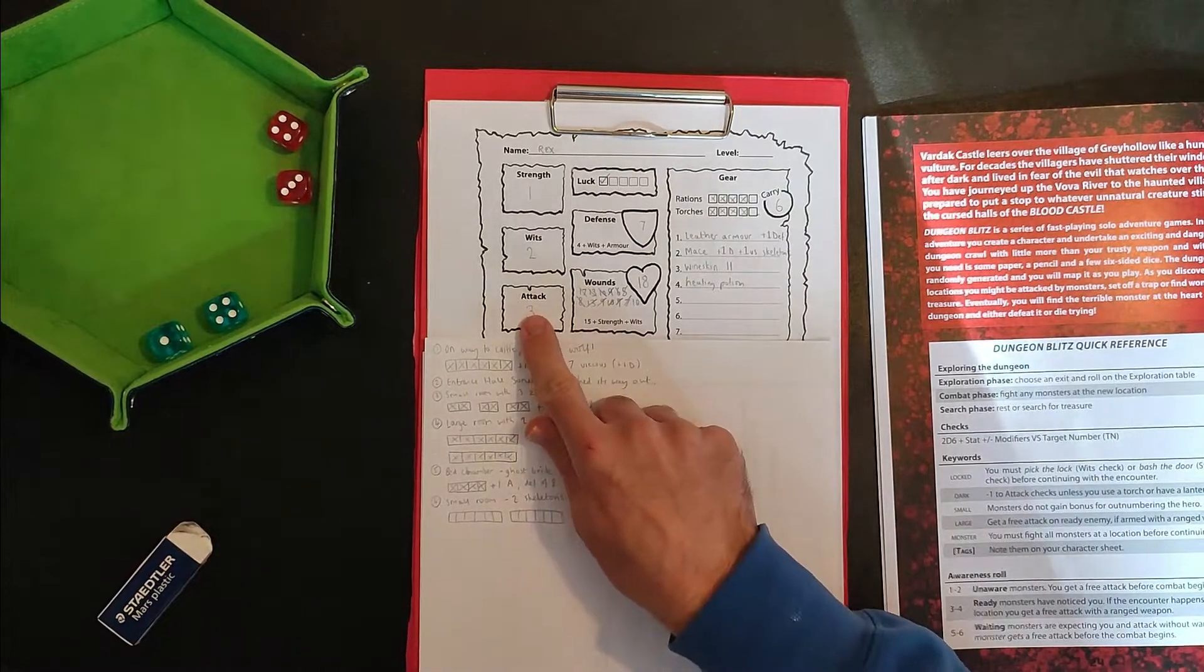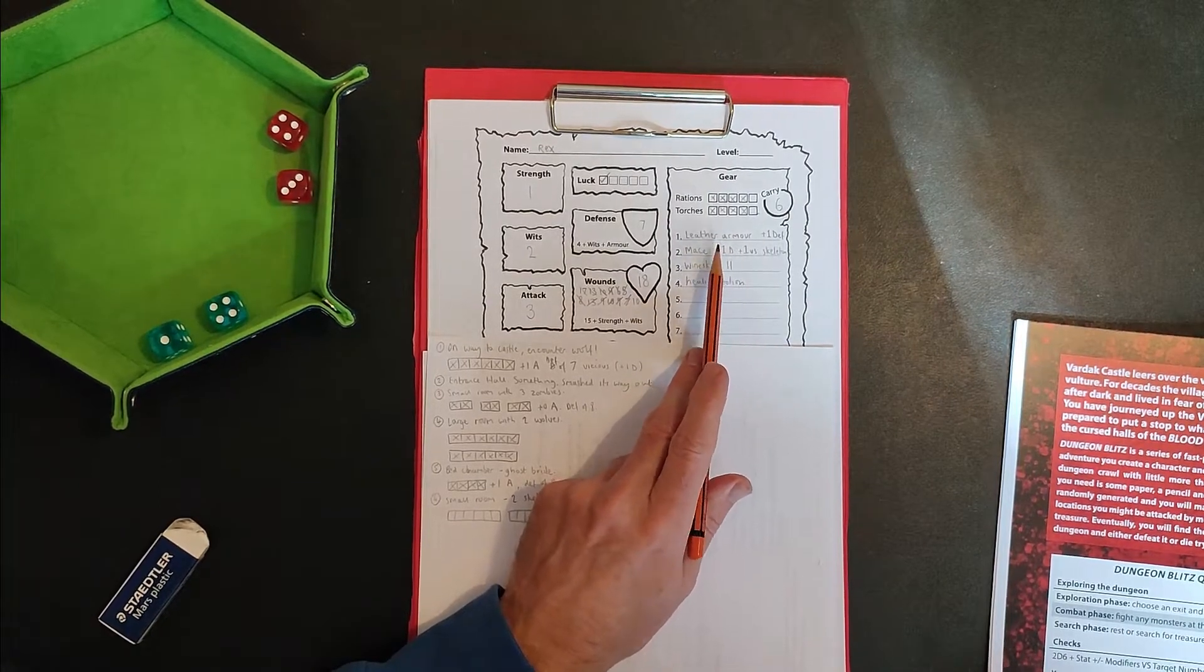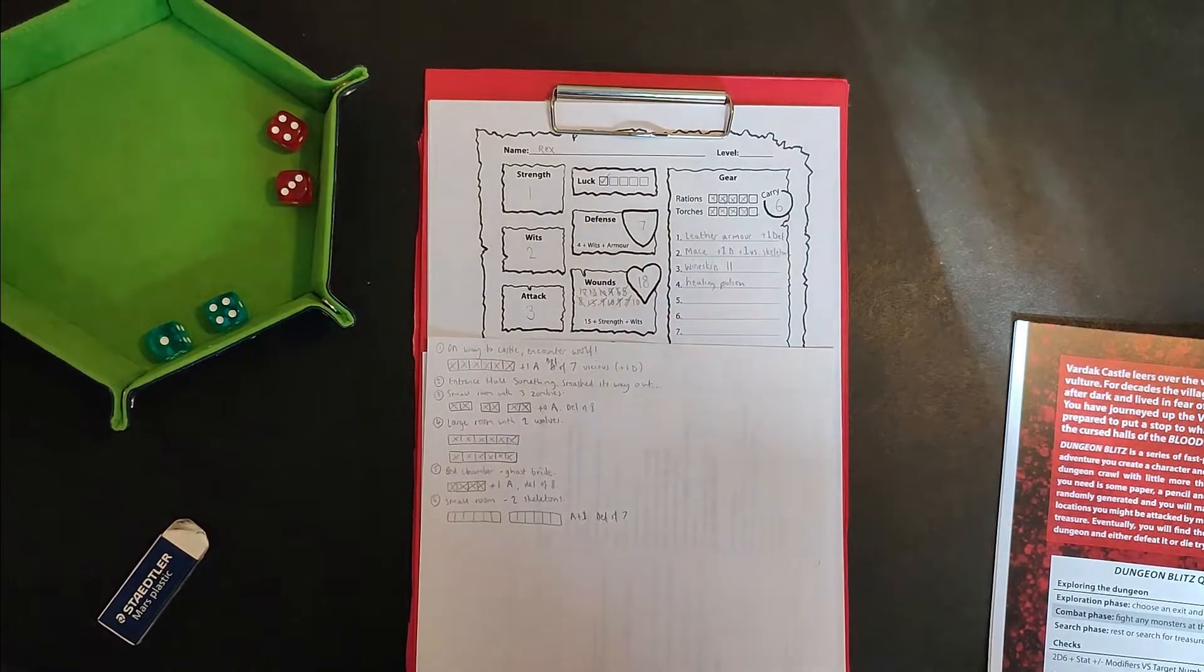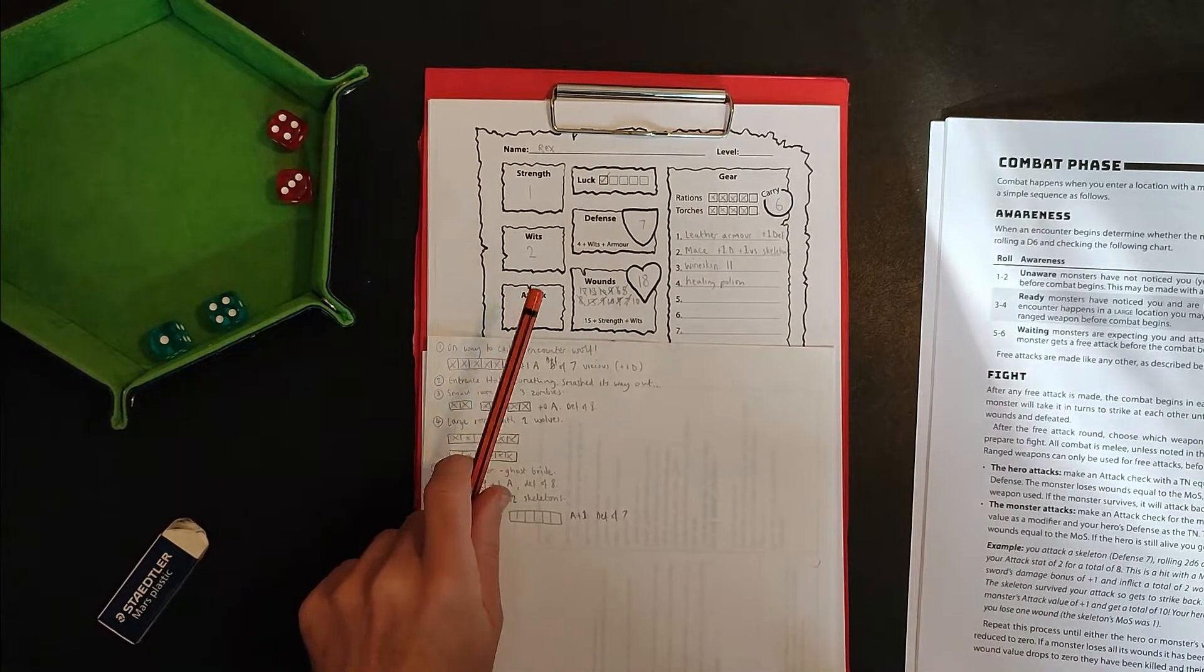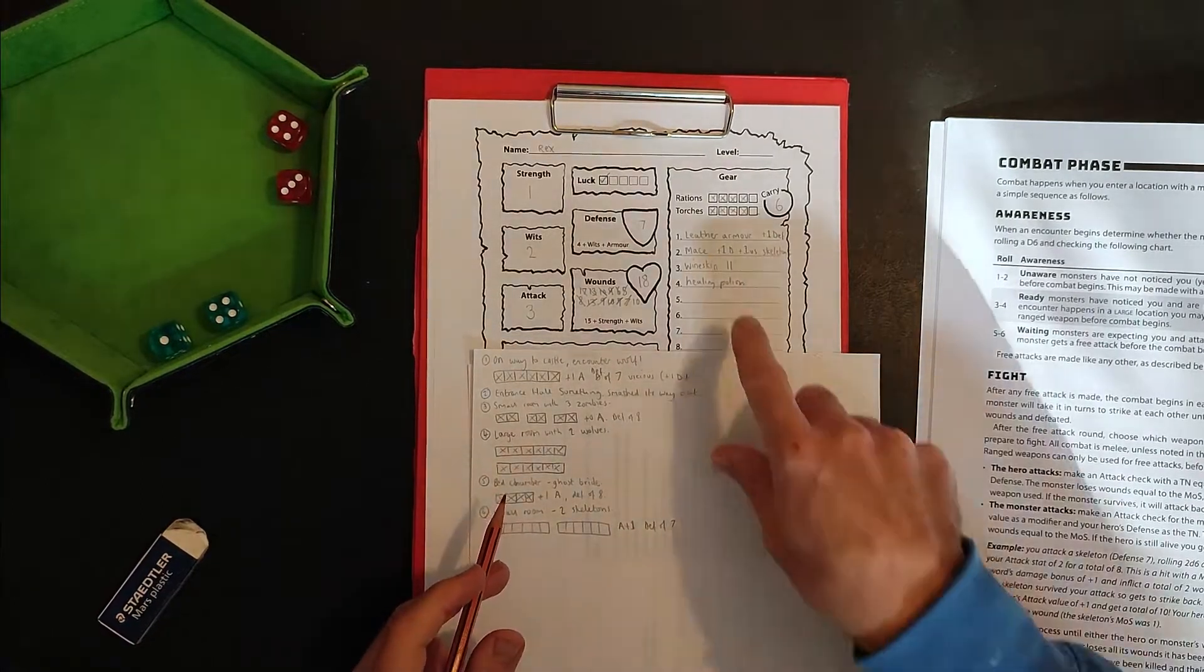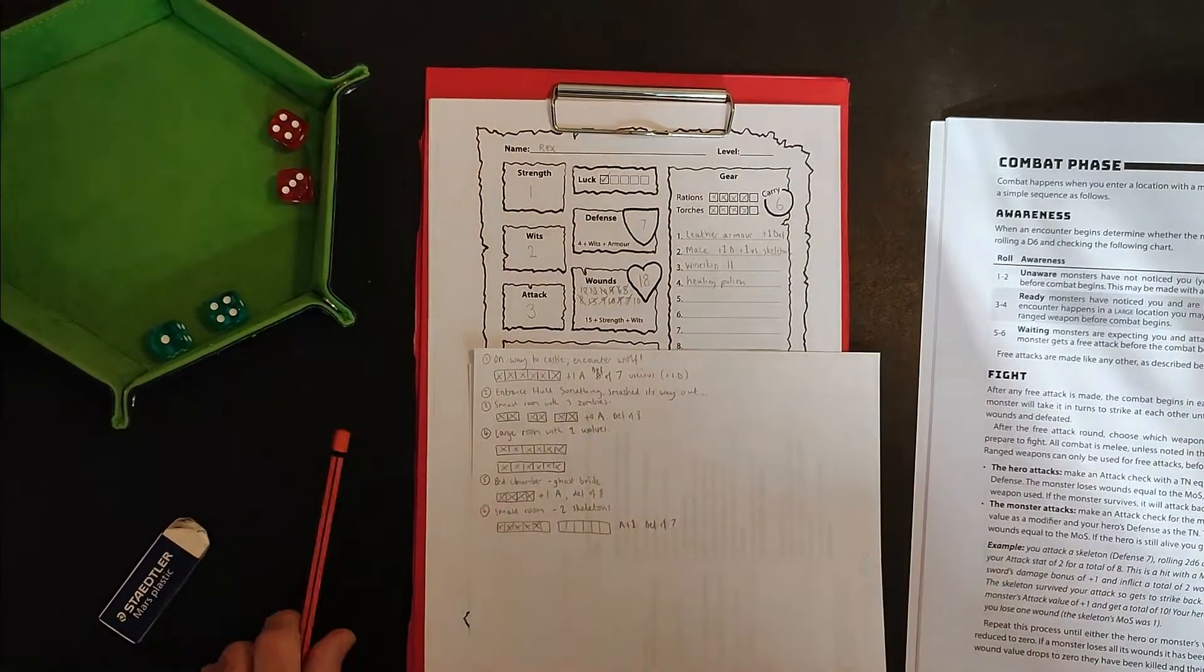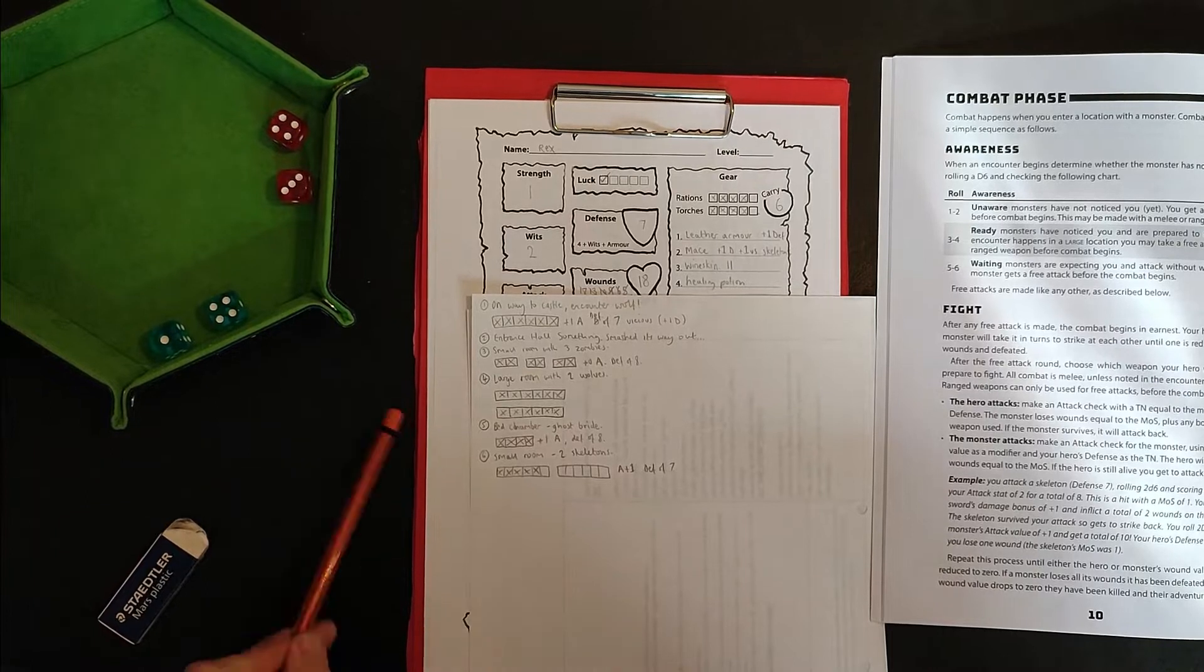Right. So I'm attacking. Seven, eight, nine, 10. Okay. All right. So I think I might possibly been adding on this plus one to my attack roll. And that's not actually how it works. I guess you add that on to your damage, which is your margin of success. So I think I might have done that wrong a couple of times. Five, six, seven. Okay, eight, nine, 10. And they've got a defense of seven. So I've got a margin of success of three, to which I add two for my mace. So five: one, two, three, four, five.